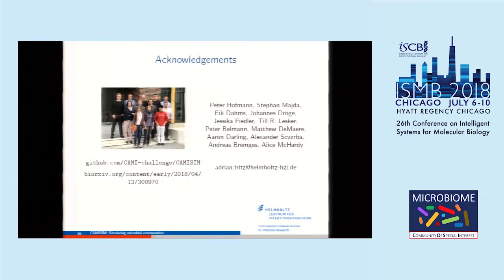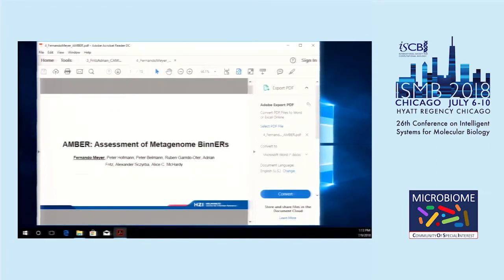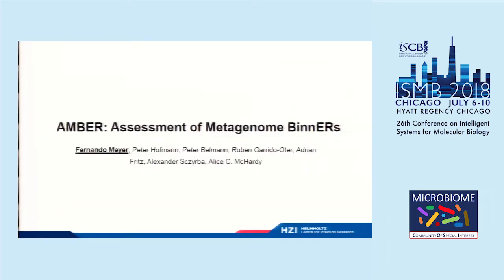Thank you very much, Adrian. Just one quick question: instead of using a regular read simulator after you find the abundances, would it be a viable alternative to use short read data from specific bacterial sequencing projects and just sample that at whatever abundances you calculate, or is there an issue with that method? That's an excellent question — we were discussing that. Right now it's not implemented, and it's hard to come by perfect reads for a really good genome. We thought about using reads from RefSeq, but those are most of the time still old 454 reads. For newer projects using Illumina data that still produce a really good reference genome needed for the gold standard, it could be viable. Thanks.